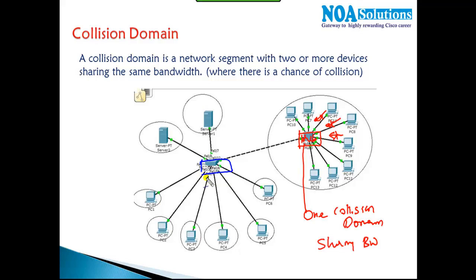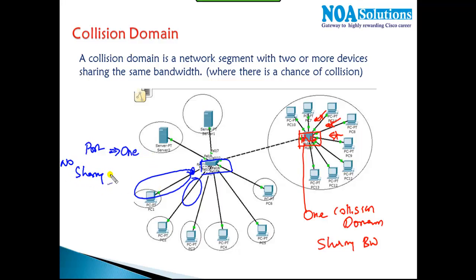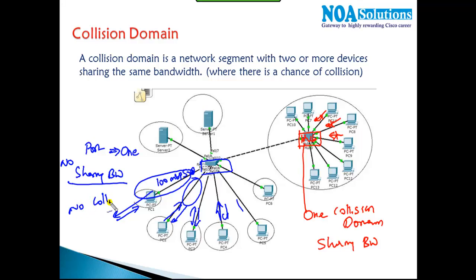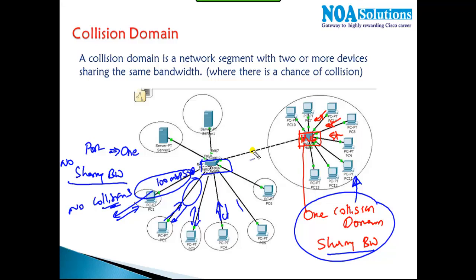In the case of switches, there is a separate collision domain for each and every port. Every port is a separate collision domain — a separate network segment — with no sharing of bandwidth. Each port has dedicated bandwidth. For a 100 Mbps port, you can send and receive at 100 Mbps. Every port has a separate road and can send and receive at the same time with no collisions. In hubs, there is only one common network segment for all, which is why hubs are not much used in today's production networks.